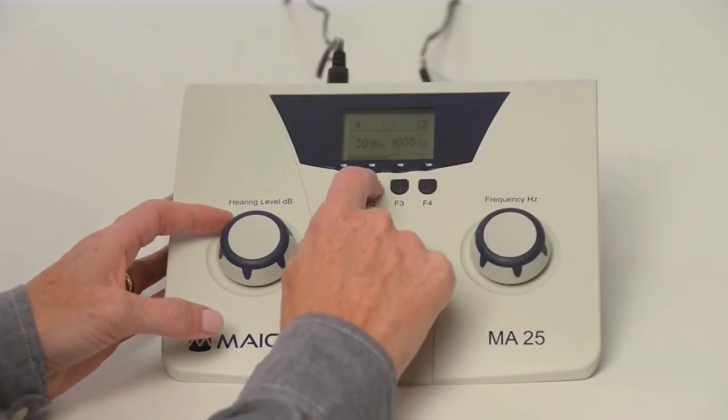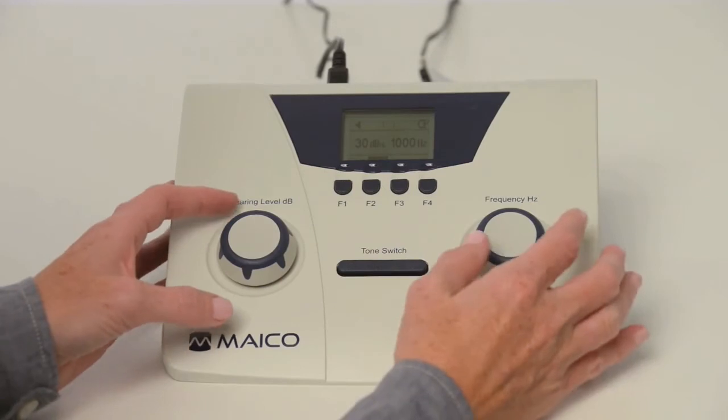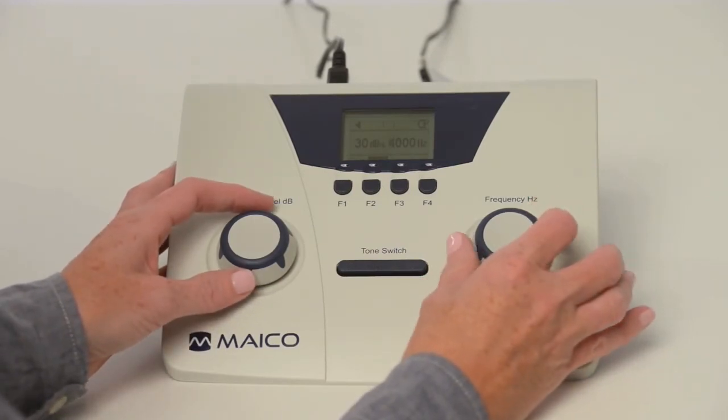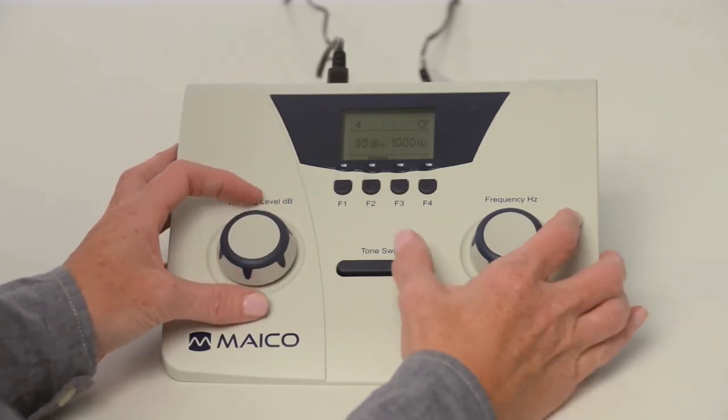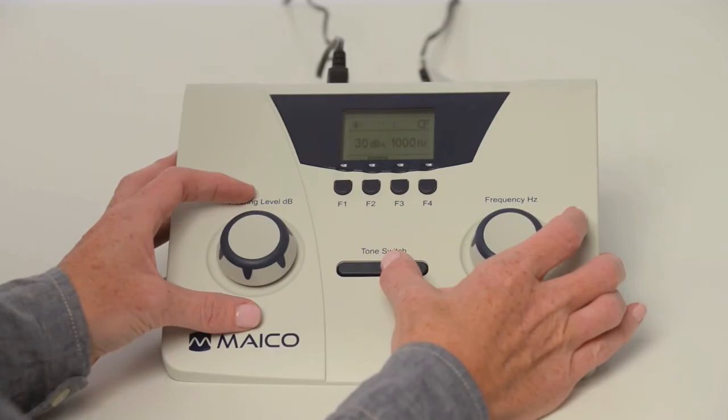Select right or left ear with the function keys. Select the test frequency with the right frequency dial. Select volume level with the left hearing level dial, and press the tone switch one to two seconds to present the tone.